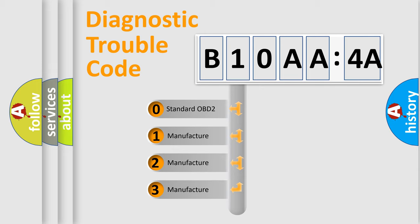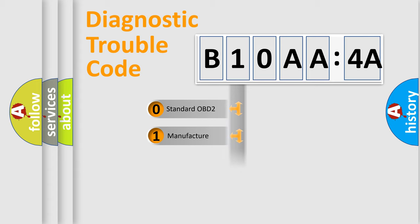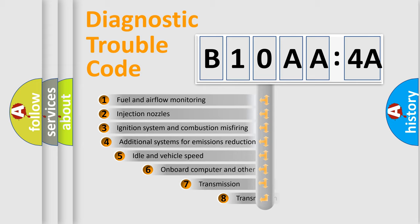If the second character is expressed as zero, it is a standardized error. In the case of numbers 1, 2, 3, it is a more prestigious expression of the car-specific error.